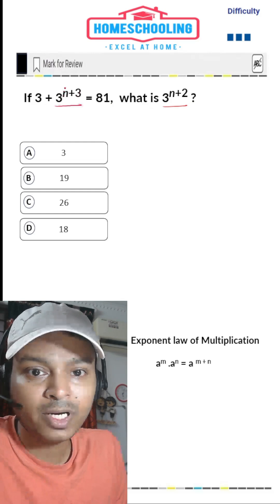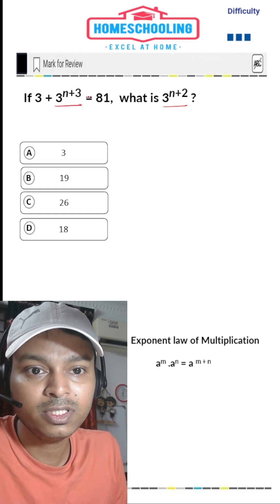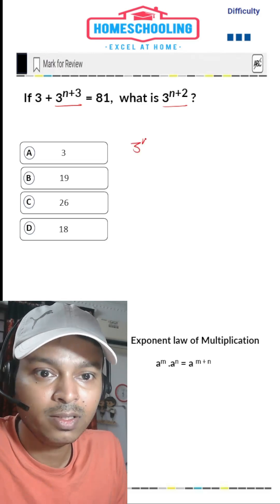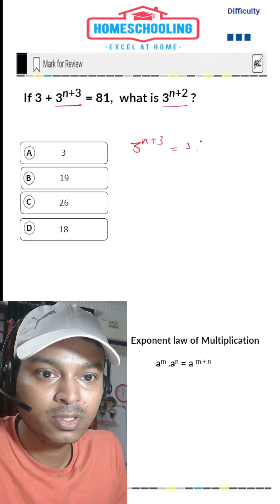In the equation, 3^(n+3), we have to convert to find 3^(n+2). So 3^(n+3) can be written as 3 times 3^(n+2).